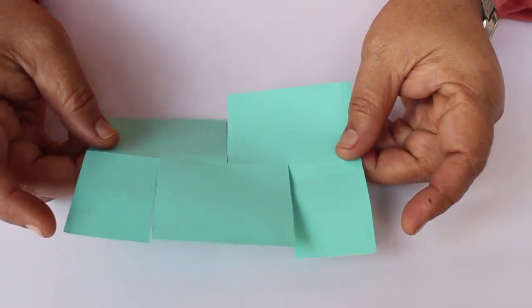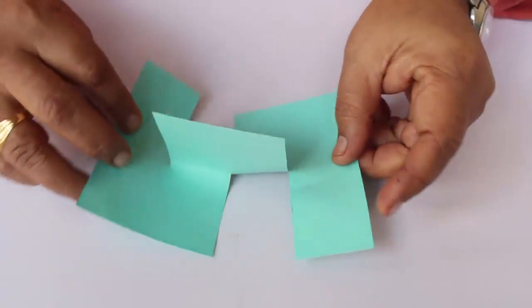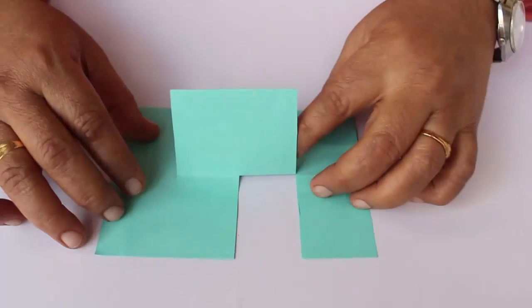This is how the paper looks like after cutting and you just flip it to make the final model.